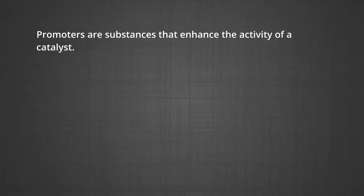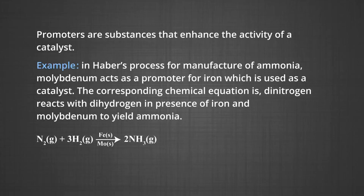You have already studied about catalysts and their functioning in the modules on chemical kinetics. It is important for you to know about promoters and poisons. Promoters are substances that enhance the activity of a catalyst. For example, in Haber's process for manufacture of ammonia, molybdenum acts as a promoter for iron, which is used as a catalyst. Dinitrogen reacts with dihydrogen in presence of iron and molybdenum to yield ammonia.